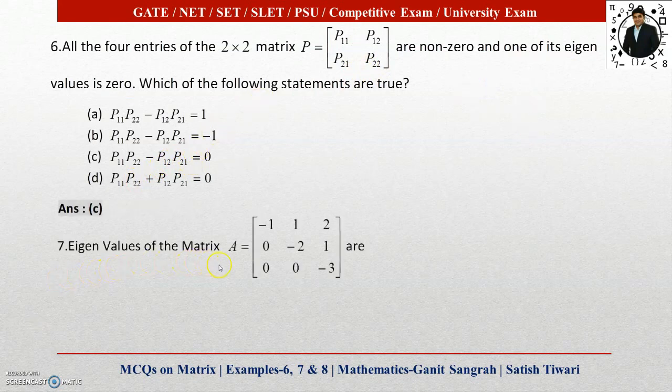Next question: the eigenvalues of matrix A. Now if you observe here, this matrix is nothing but an upper triangular matrix in which the elements below the principal diagonal are 0. So in such a matrix,